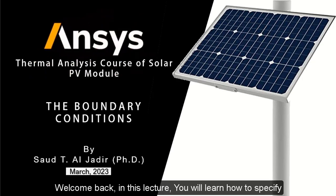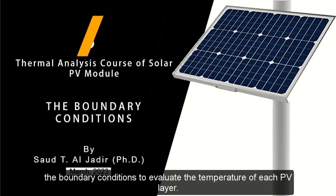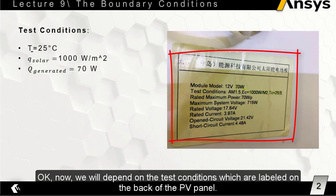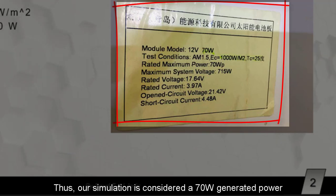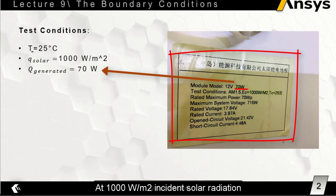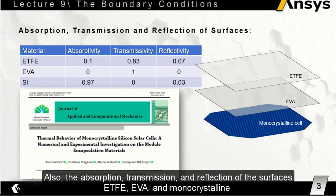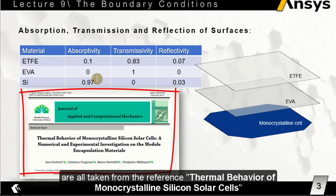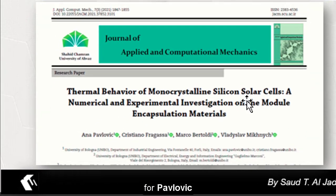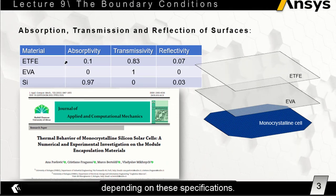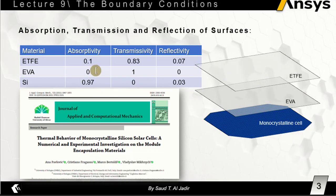Welcome back. In this lecture you will learn how to specify the boundary conditions to evaluate the temperature of each PV layer. We will depend on the test conditions labeled on the back of the PV panel. Our simulation considers 70 watts generated power at 1000 watts per meter square incident solar radiation at 25 degrees Celsius ambient temperature.